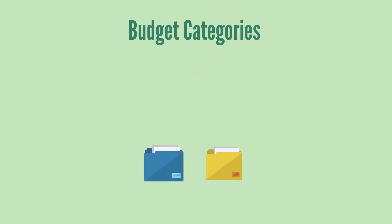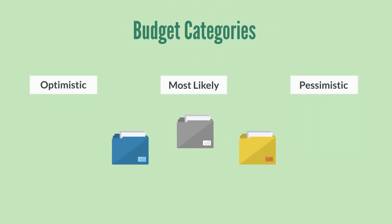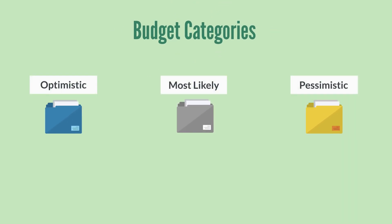When you create new budgets, you'll need to select the appropriate budget category. This is just another way for you to keep your finances well organized. Budget categories allow you to create more than one budget for the same time period and criteria. This allows you to compare different possibilities, even setting out best and worst case scenarios to better help you visualize potential income and expense totals.